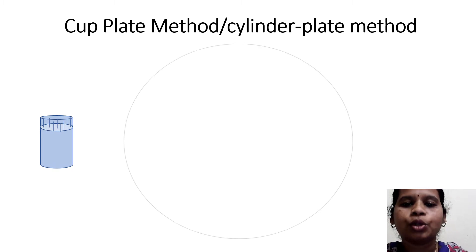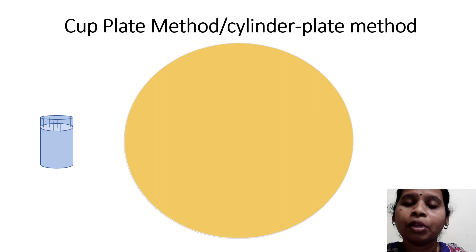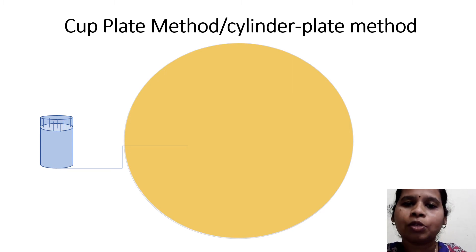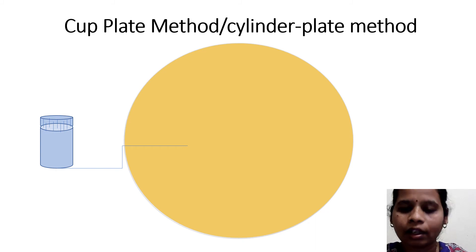This petri dish will be poured with the agar medium. Either this agar medium will be liquid and the enzyme solution will be mixed in it, or we can have the agar medium solidified first and after solidification the enzyme solution will be streaked over the agar medium using different streaking techniques.